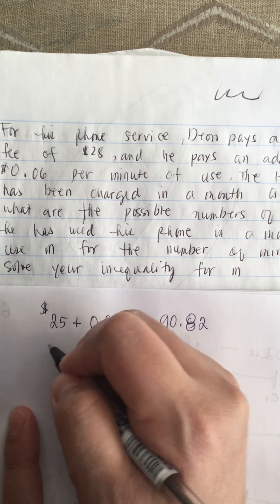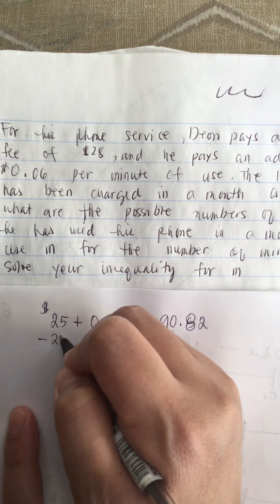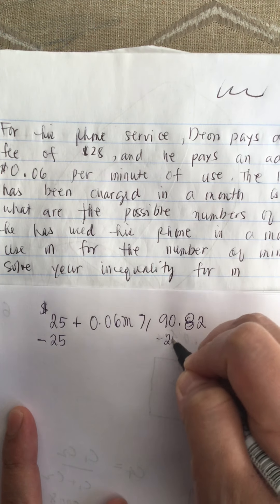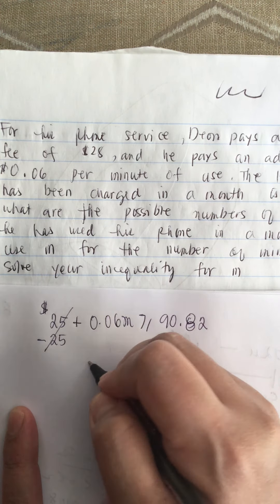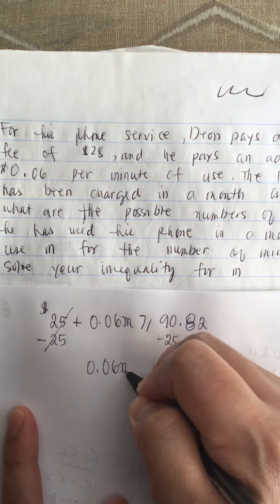Now we solve this inequality. We subtract 25 from both sides, so this becomes 0.06M.